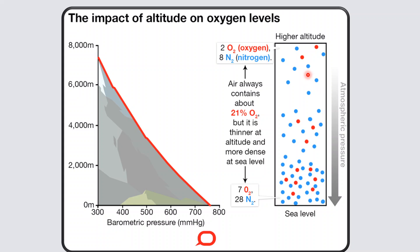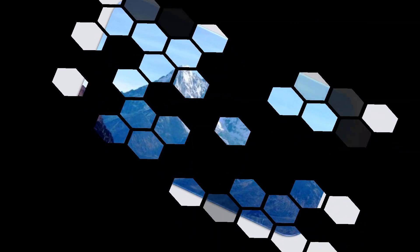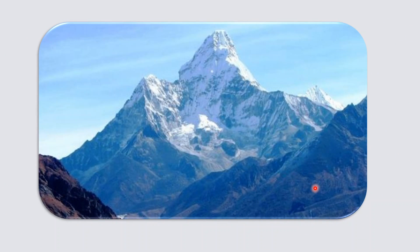Here we can see how the molecules of air are far away from one another compared to molecules found closer to the ground. The heat radiated by the earth escapes back to space owing to the rarity of the molecules. Consequently, the upper layers of the atmosphere become cool. This is the reason why plains are warmer than plateaus, plateaus have a moderate climate, hill stations have a cool climate, and very high mountains have snow-capped peaks.